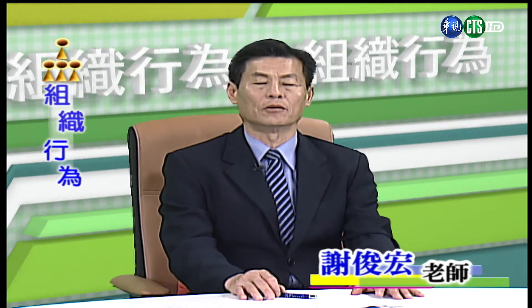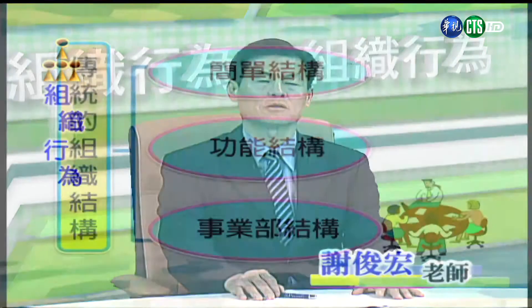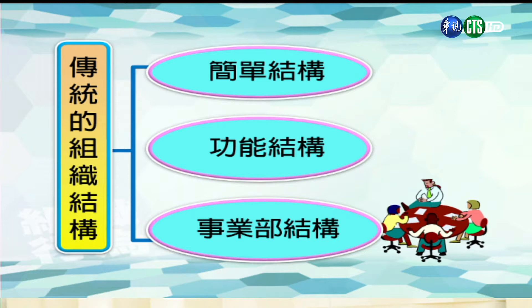以上是属于传统的组织设计的因素，接着来介绍在组织设计因素下有哪些常见的组织结构。根据研究报告，传统的组织结构大概有三种：简单的结构、功能结构、事业部结构。